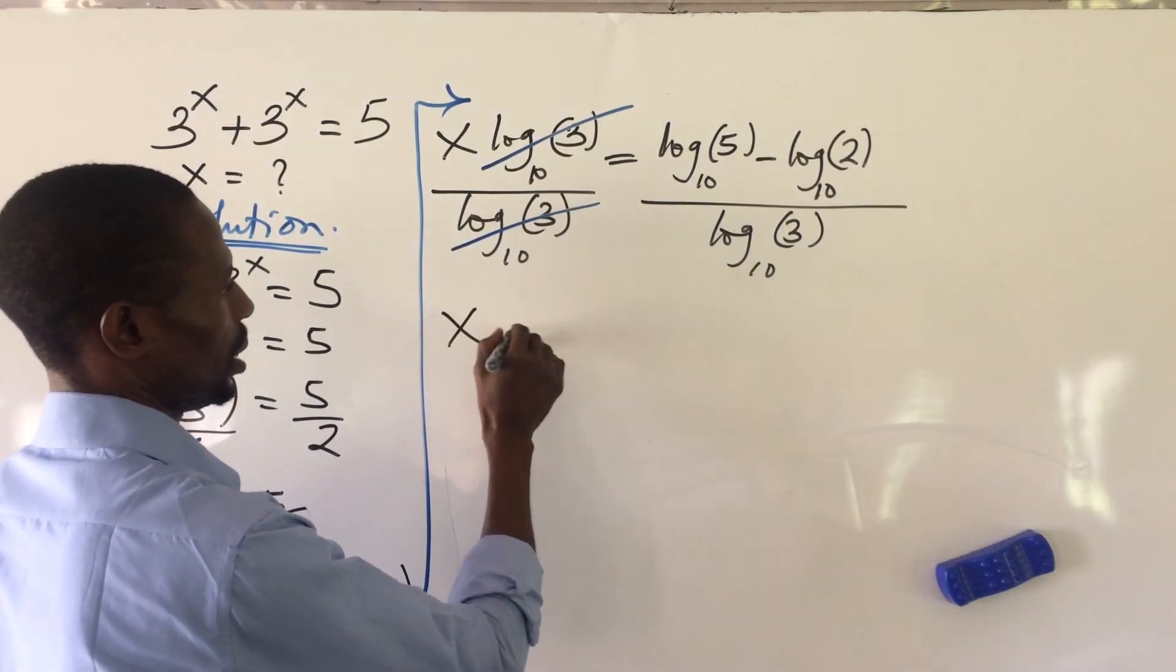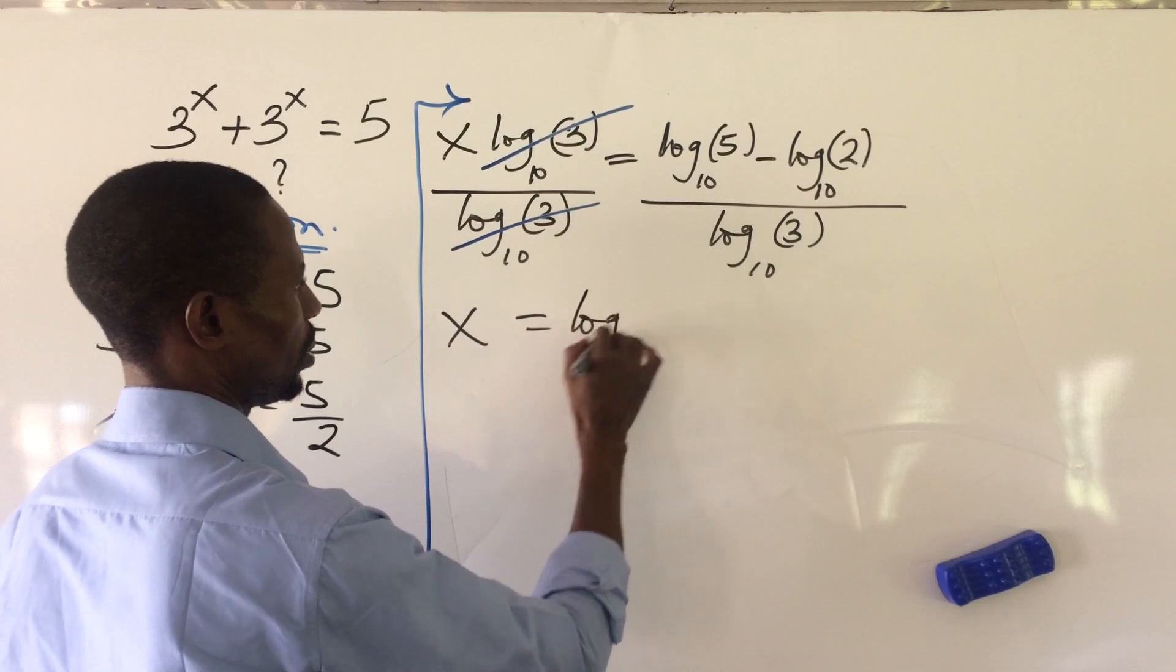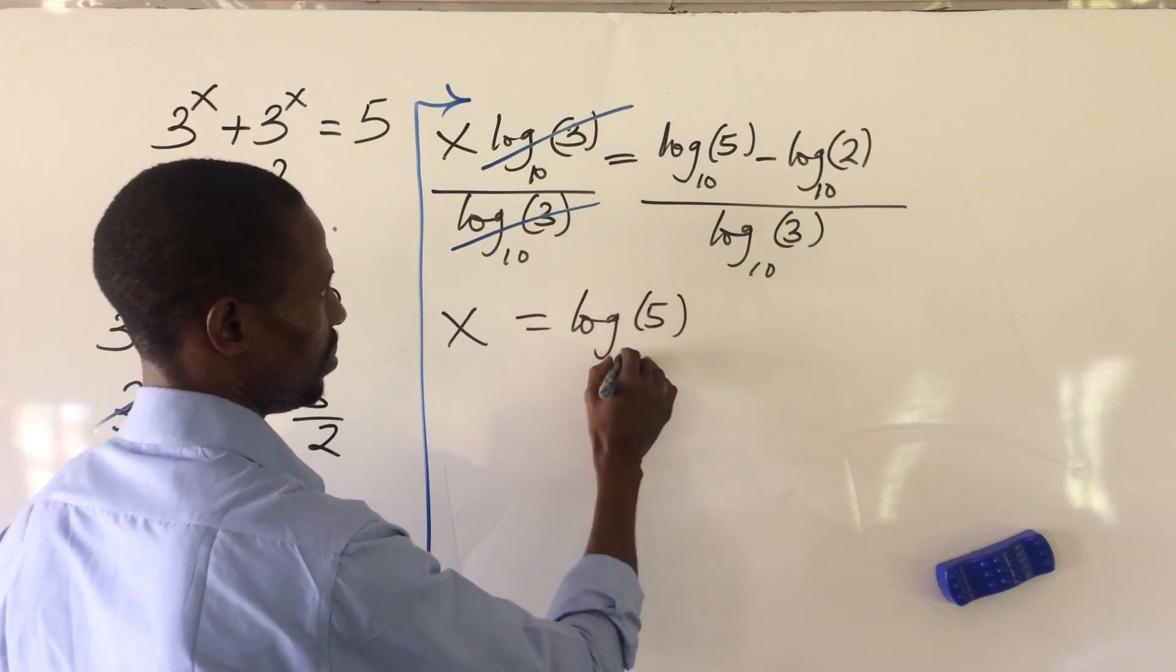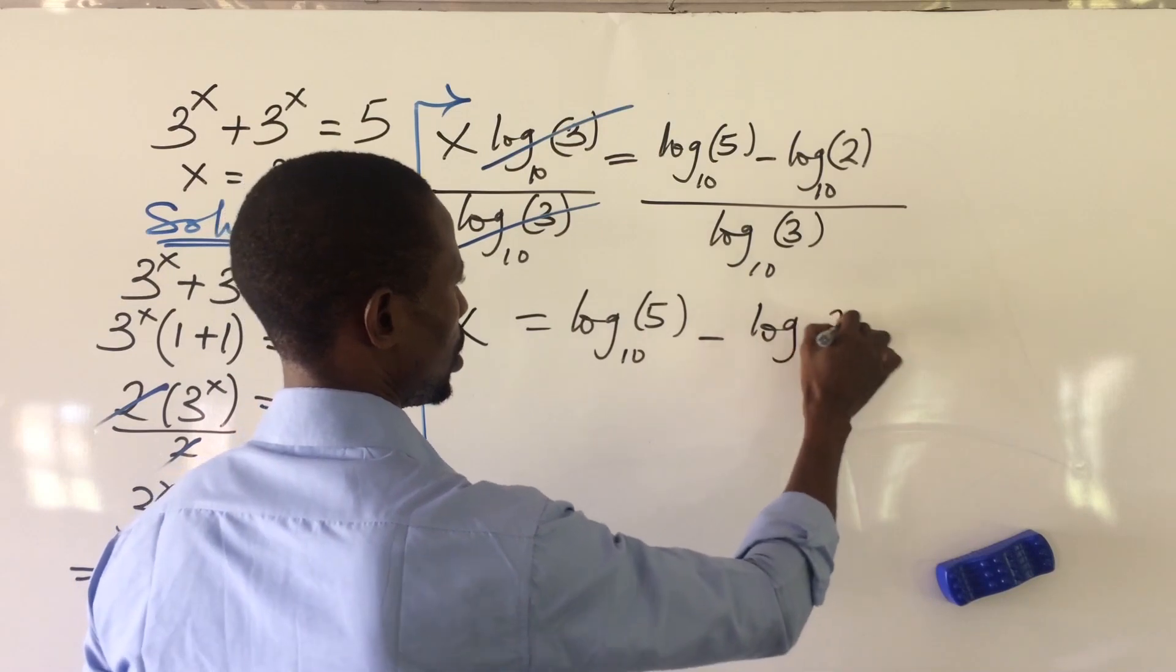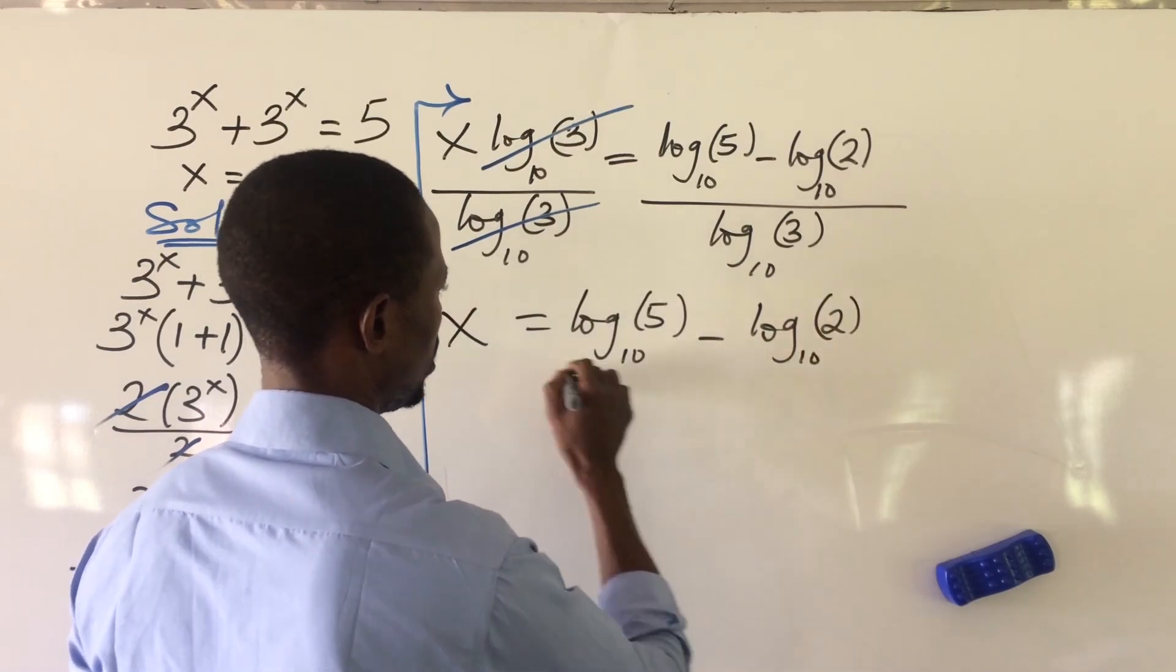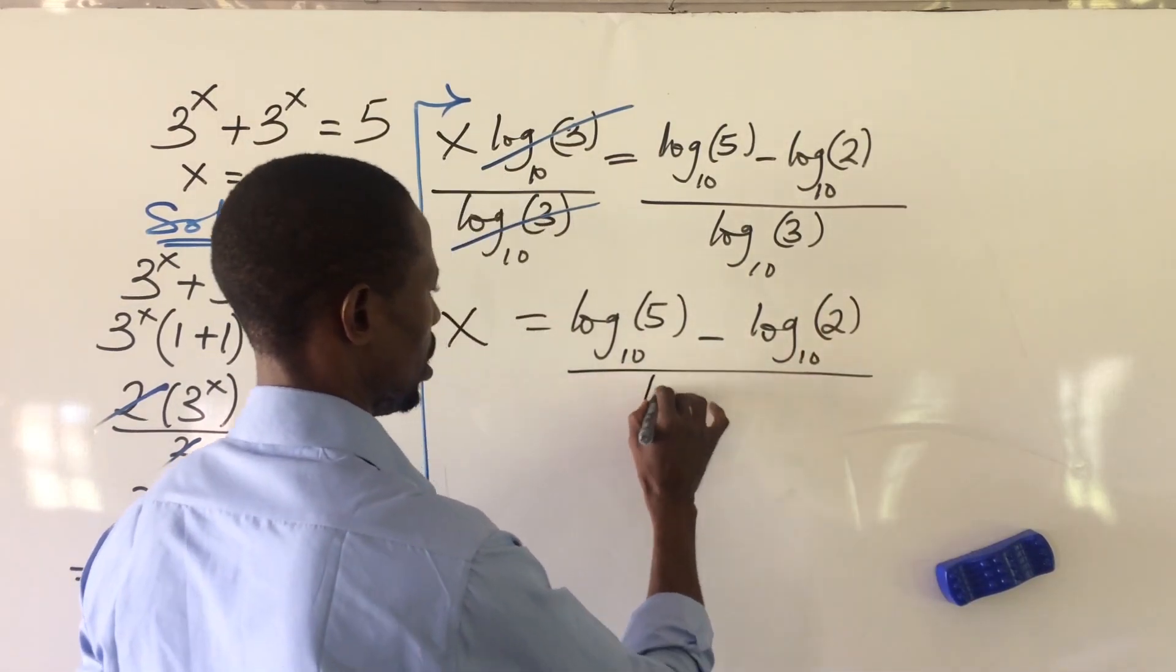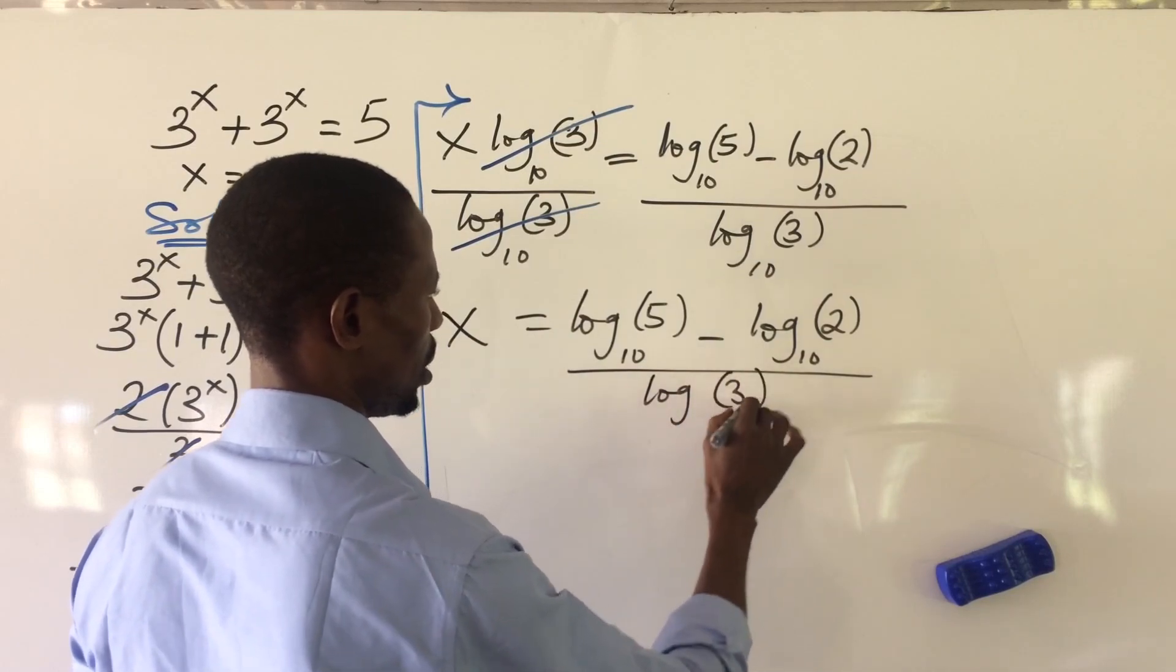So we're going to have x equal to log 5 base 10 minus log 2 base 10, all over log 3 base 10.